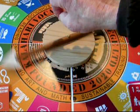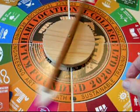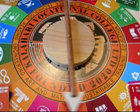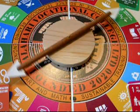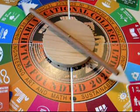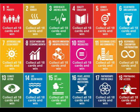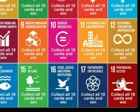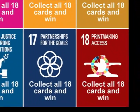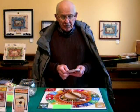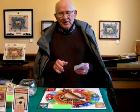The spinner will point me at two of 18 of the United Nations Sustainable Development Goals. There are actually 17 in the original United Nations model, but I added printmaking access as an 18th card also to make the number even.